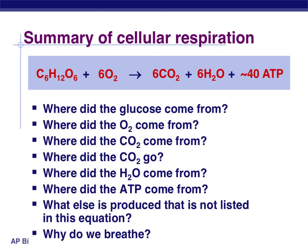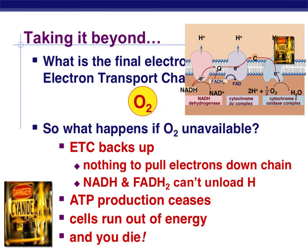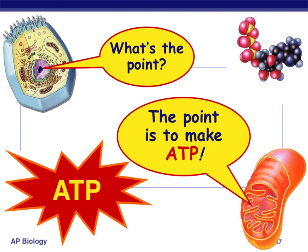So hopefully this was helpful. If you can go through and answer these questions, then you're in pretty good shape for knowing and understanding this process. Remember, to do this you have to have oxygen. So what happens if there isn't any oxygen? Well, we still go through and create our proton gradient, but there's nothing to pull those hydrogens through. So eventually the system will back up. Some of those electron carriers won't be able to get rid of their hydrogens, we're not going to make any ATP, our cells will run out of energy and you'll die. And that's why cyanide is poisonous to us — because it blocks the ability of oxygen to make it into your mitochondria. So what was the point? To make ATP. I hope this video was helpful. See you in class. Bye.